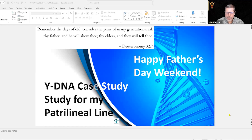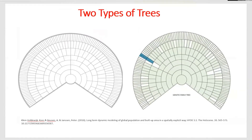Happy Father's Day weekend — I think this topic is appropriate for Father's Day; it's kind of the gift that only a man can give. So let's celebrate the men today. I want to start by mentioning that we have two types of trees: we have a family tree — the genealogy pedigree chart that includes everyone we've descended from — and then we have a genetic family tree. They're not the same. As you go farther back, there are gaps in the genetic family tree that we have no information from and will never have.